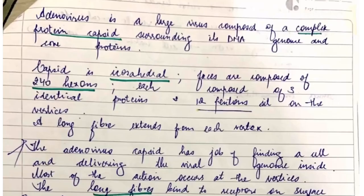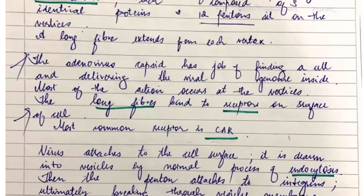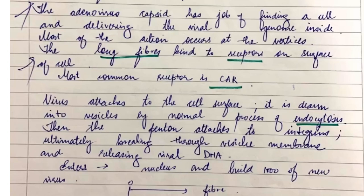Now I have explained the structure of the virus. This has long fibers which bind to receptors and the most common receptor we will study is CAR, which stands for coxsackievirus adenovirus receptor. The life cycle is basically separated into two phases: early phase and the late phase.